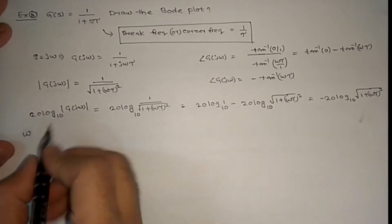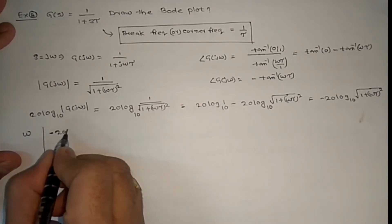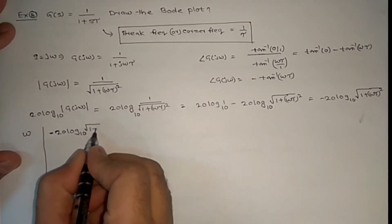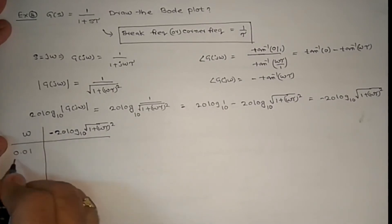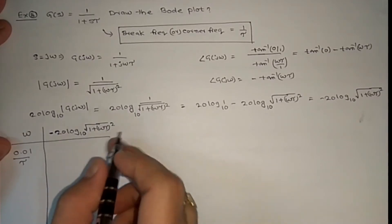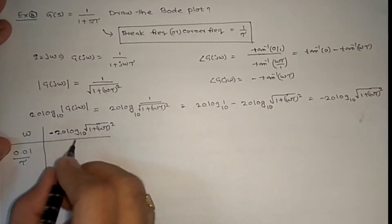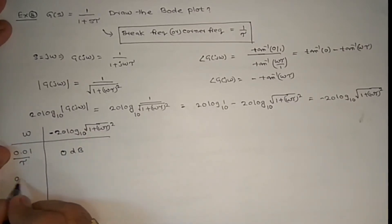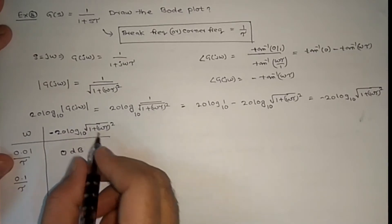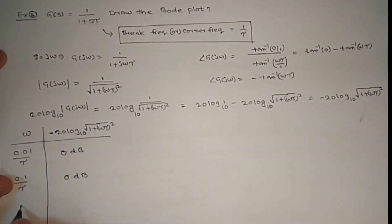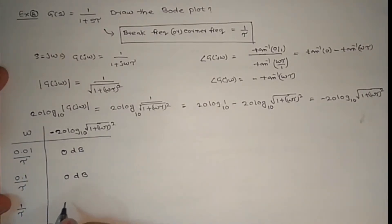Evaluating the magnitude −20 log √(1 + (ωτ)²) at various frequencies: at ω = 0.01/τ, (0.01)² is very small so this equals log(1) = 0 dB. At ω = 0.1/τ, (0.1)² = 0.001, again approximately 0 dB. At ω = 1/τ (corner frequency), we get −3 dB, but approximately 0 dB for simplicity.